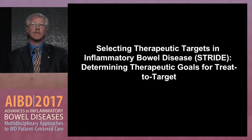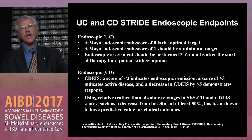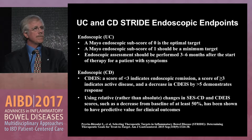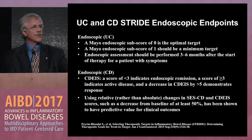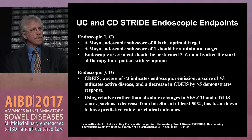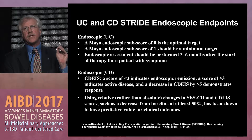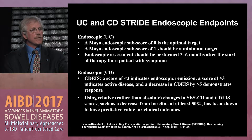The STRIDE guidelines were published in the American Journal of Gastroenterology in 2015. For ulcerative colitis, a Mayo endoscopic score of zero is the optimal target, but a Mayo sub-score of one should be the minimum target in clinical trials. Endoscopic assessment should be performed three to six months after starting therapy. For Crohn's disease, the CDEIS of less than three indicates endoscopic remission. Using relative rather than absolute changes in the SES-CD — such as a decrease from baseline of at least 50% — has been shown in clinical trials to be a marker for better clinical outcomes.